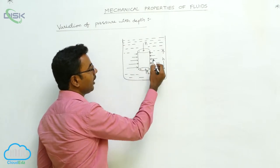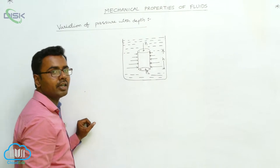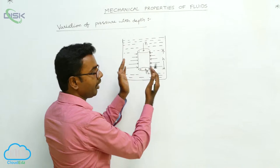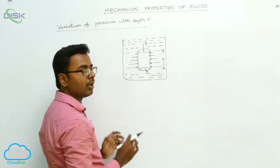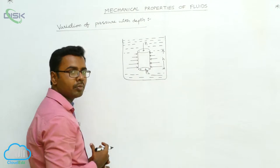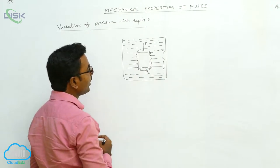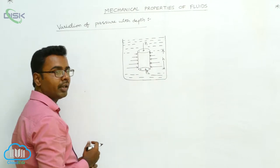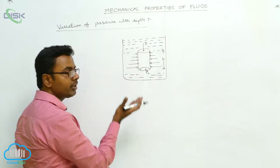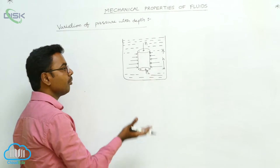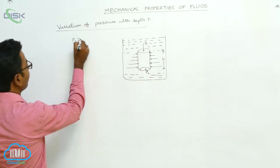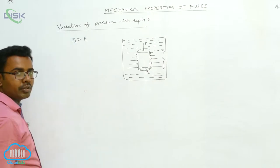As we go down, the length of the lines increases, indicating that pressure is increasing. The pressure in all directions on the curved surface is equal, so it is cancelled. The resultant pressure acts on the top surface and bottom surface only. We observe that P1 on the top surface is less, and P2 on the bottom surface is more. Therefore, P2 is greater than P1.